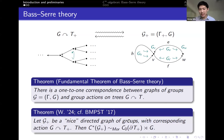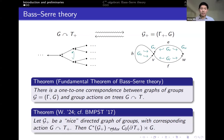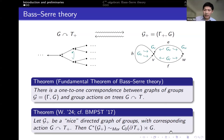The basic idea of the result is this: take some directed graph of groups, and that will correspond to some group action on a directed tree. From both of these objects we can construct C*-algebras — one C*-algebra coming from the directed graph of groups and one coming from the group action. These C*-algebras are what's called Morita equivalent, so essentially they have the same representation theory. They might not be isomorphic, but this is really the second best thing. You can think of this result as some kind of C*-algebraic Bass-Serre theorem.